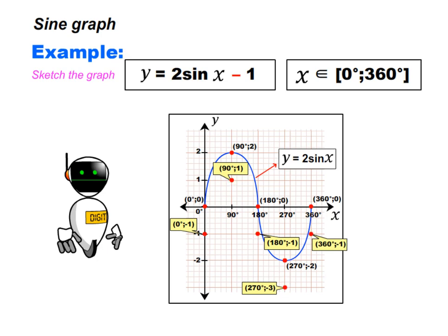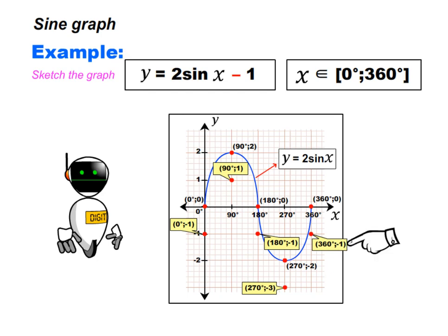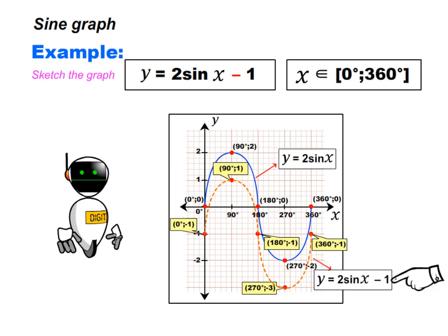Look at the dots: 0 degrees and minus 1 is here, 90 degrees and 1 is here, 180 degrees and minus 1 is here, and 360 degrees and minus 1 is here. Let us simply join the dots. The graph of y is equal to 2 sin x minus 1 should look like this.